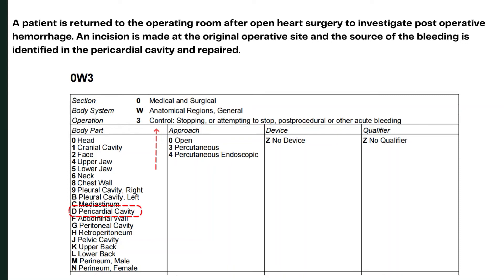The code should be 0W3D0ZZ. The section is Medical and Surgical, which is 0. The body system is Anatomical Regions, General — since the procedure is performed in the pericardial cavity, we take the body system as Anatomical Regions. The third character for root operation is Control (3). The fourth character for body part is Pericardial Cavity, which is D. The approach for the fifth character is Open (0). The sixth character is Z for no device, and the seventh character is Z for no qualifier.